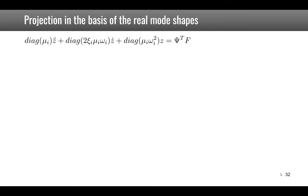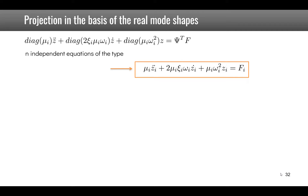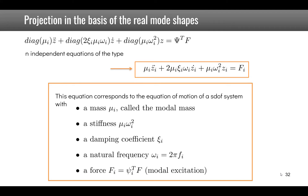The projection onto the real mode shapes leads to n independent equations of the type: mu_i·z-double-dot_i + 2·mu_i·xi_i·omega_i·z-dot_i + mu_i·omega_i-squared·z_i = f_i. This is the equation of motion of a damped single DOF system with mass mu_i, stiffness mu_i·omega_i-squared, damping ratio xi_i, natural frequency omega_i, and modal force f_i.